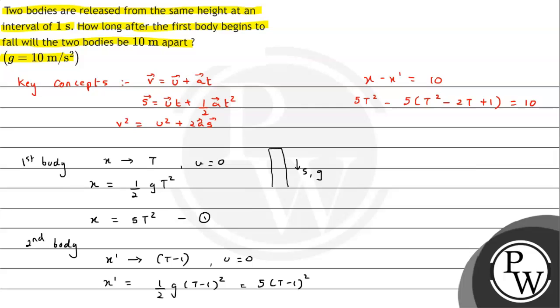We can expand using A minus B the whole square formula. So 5T squared minus 5T squared plus 10T minus 5 equals 10. So this cancels, so 10T will be equals to 15. So T's value is 1.5 seconds.